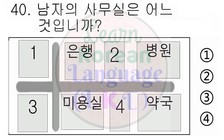다음은 36번부터 37번까지 문제입니다. 다음을 듣고 들은 내용과 관계있는 그림을 고르십시오. 보기 문제. 생일이 언제예요? 정답은 2번입니다. 36번. 실례지만 무슨 일을 하세요? 요리사예요. 주방에서 음식 만드는 일을 해요. 다시 들으십시오. 실례지만 무슨 일을 하세요? 요리사예요. 주방에서 음식 만드는 일을 해요.